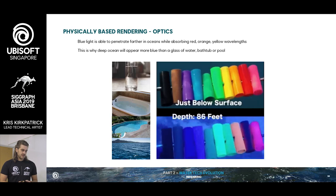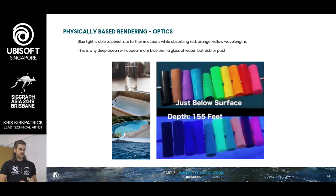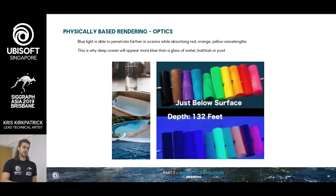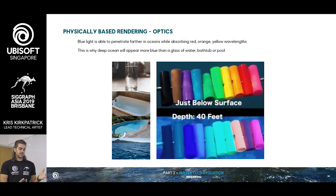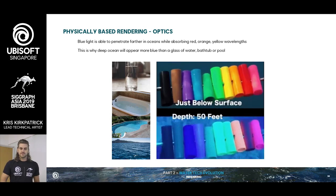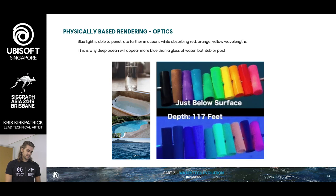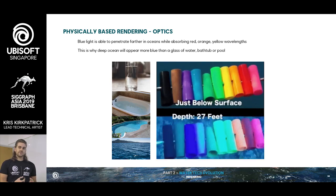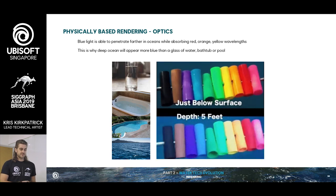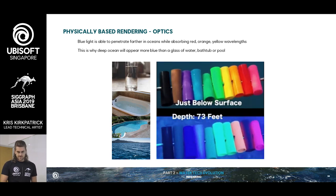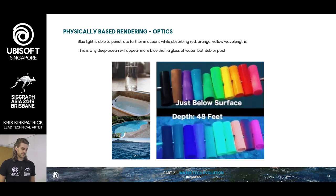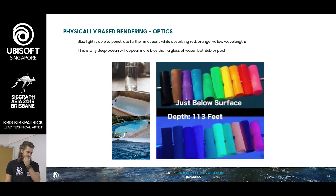To understand absorption, there's a video showing exactly what happens to light the deeper you go. That's why a glass of water looks clear, but a bathtub or pool has blue in it — because at greater depths, the only color that really remains is shades of blue. You can see the reds and yellows and even the greens start to be absorbed into the water, leaving behind blue.